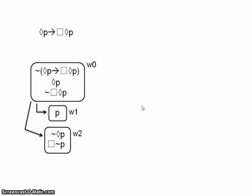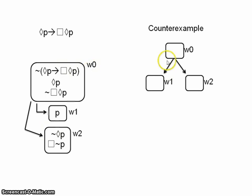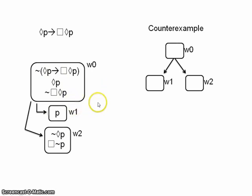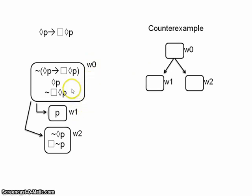First, we draw our worlds and the relations between them as they appear in the tree. We can see we have w0 which accesses w1, and w0 which accesses w2. Now we assign propositional variables to each world. The basic idea is: if a propositional variable occurs in a world, put it in the corresponding world in your counterexample. If the negation occurs, or if neither the variable nor its negation occurs, put the negation in the corresponding world. In w0, neither P nor not-P occurs, so we put not-P. In w1 we have P. In w2, neither P nor not-P, so not-P in the counterexample.